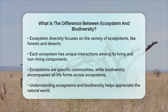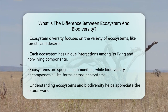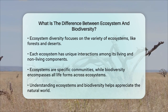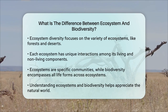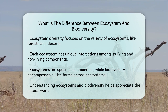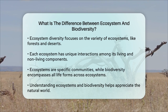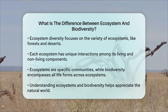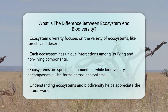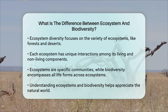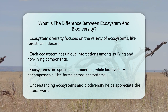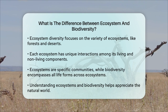So the key difference is that an ecosystem is a specific community of living and nonliving things interacting in a particular area, while biodiversity is the overall variety of life across all these different ecosystems and within each species. In summary, ecosystems are the individual communities where life happens, and biodiversity is the broader concept that encompasses all the different types of life and ecosystems on our planet. Understanding both is crucial for appreciating the complexity and beauty of the natural world.